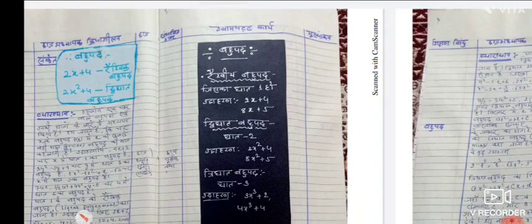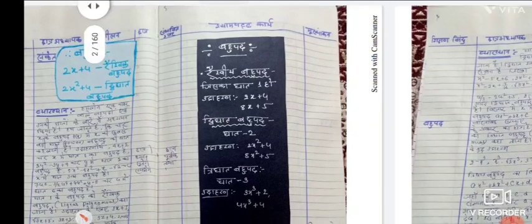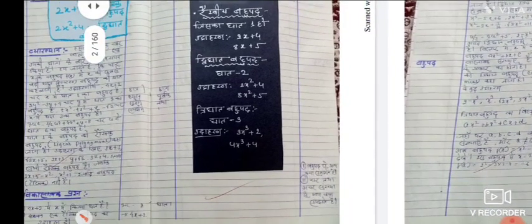After that, the blackboard work (shyamapat karya) includes: Bahupad — Raikhik bahupad (degree 1), examples: 2x+4, 8x+5. Then degree 2 bahupad (Dwighat), examples: 2x²+4 and 8x²+5. Then degree 3 bahupad (Trighat), examples: 3x³+2 and 4x³+4.